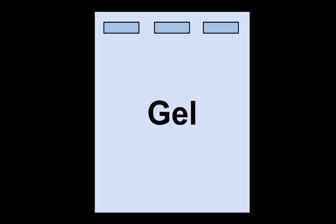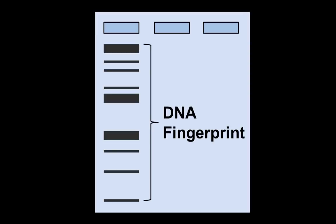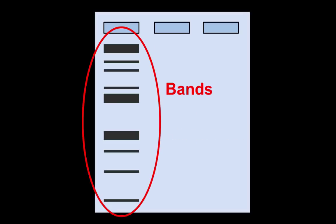Here I have a gel. I'm going to put my DNA into these boxes, which are called wells. Then I'm going to use an electric current to actually pull the DNA through this gel and create a DNA fingerprint, which looks something like this. Each one of these lines is called a band. You'll notice some of the bands are a little bit thicker than others — that just means there's more DNA of that size. We're not going to worry too much about the size of the bands, just their location.